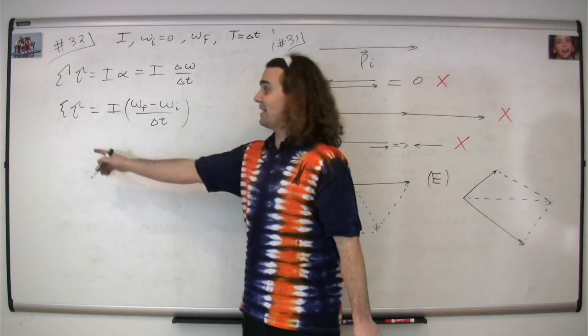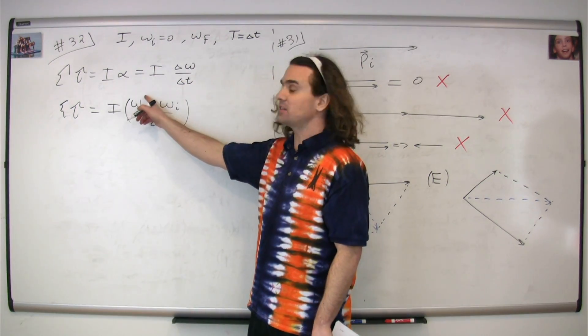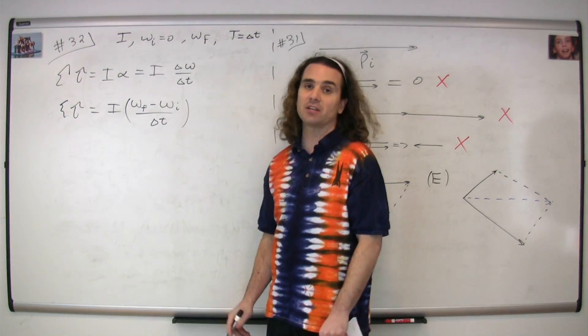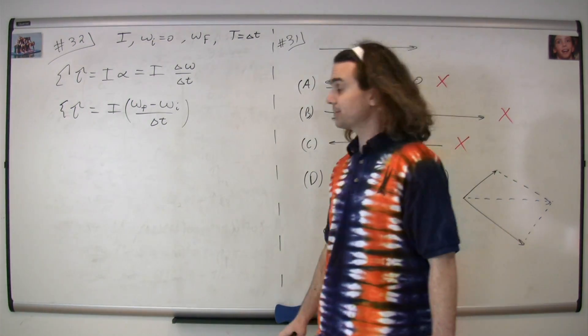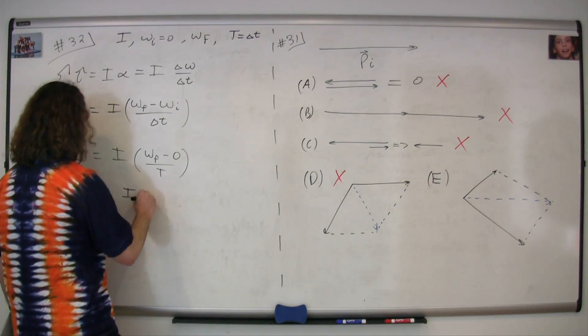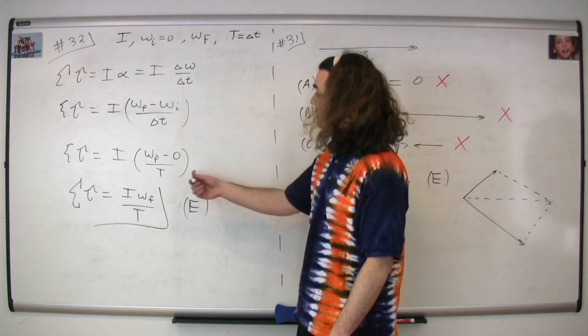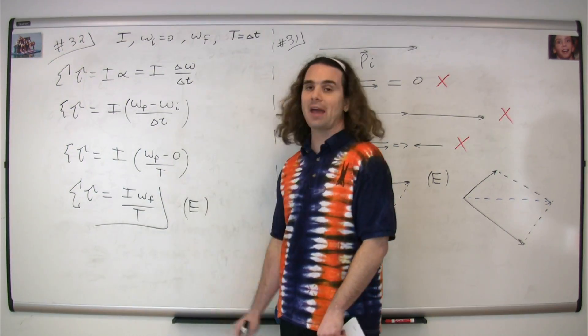So we get that the net torque is equal to the moment of inertia times the angular velocity final minus the angular velocity initial, divided by the change in time. We just substitute in our known variables. The initial angular velocity is equal to zero, and the change in time is equal to capital T.